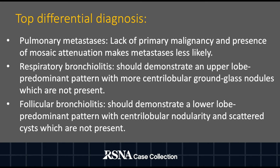There are a number of differential diagnoses which could have been considered in this case. Pulmonary metastasis could have been considered; however, the lack of a primary malignancy and the presence of mosaic attenuation would make this less likely. Given the history of smoking, respiratory bronchiolitis could have also been considered; however, this should demonstrate an upper lobe predominant pattern with more centrilobular ground glass nodules, which are not present. Follicular bronchiolitis could have also been considered; however, this should have demonstrated a lower lobe predominant pattern with centrilobular nodularity and scattered cysts, which are not present in this case.